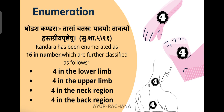According to Susruta Charira, there are Shodasha Kandaraha — that means 16 Kandaras in number. Among these, 4 are present in the lower limbs, 4 are present in Hastastha meaning the upper limb, 4 are present in Griva or the neck region, and 4 are present in Prishta or the back region.